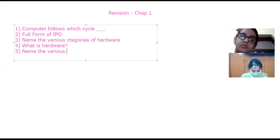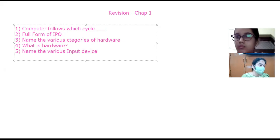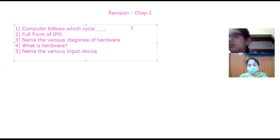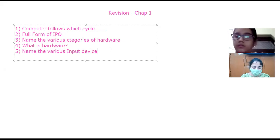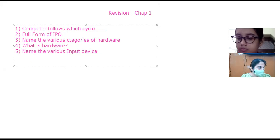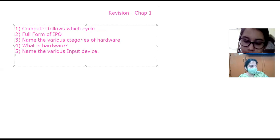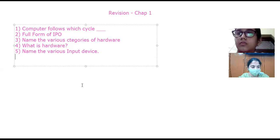Name the various input devices. The devices which are used to enter data into the computer are called input devices. The various input devices are keyboard, mouse, scanner, microphone, digital camera, webcam, barcode reader, trackball, and joystick. There are many input devices used to enter data into the computer.